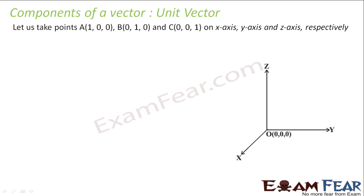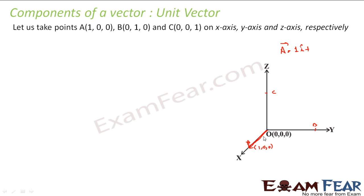Let's suppose we take 3 points A, B and C. A is (1,0,0), B is (0,1,0) and C is (0,0,1). Let's write this in vector form. For vector A at point (1,0,0), the whole vector is in the x direction only. So it is 1i + 0j + 0k, which is nothing but i cap — a unit vector in the x direction.